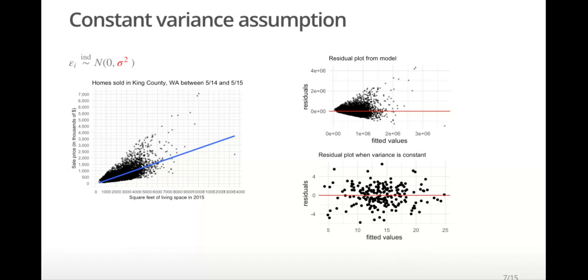The constant variance assumption, also called homoscedasticity, means that the residuals should always have the same variance or be similarly spread around. Violations of this assumption can lead to incorrect inferences.